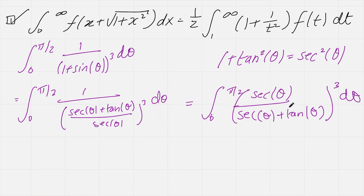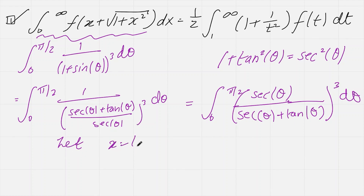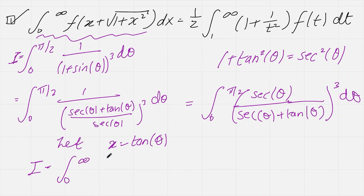It might look like we've made things messier, but we want to use the lemma. The correct substitution is x = tanθ. This will change our limits to 0 to infinity: when θ = 0, x = tan(0) = 0; when θ → π/2, x → ∞, because tan of a number close to π/2 tends to infinity.